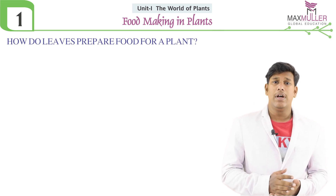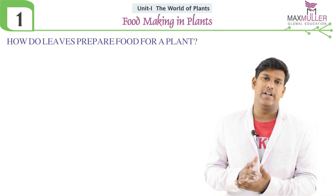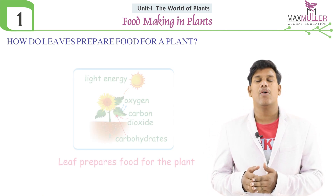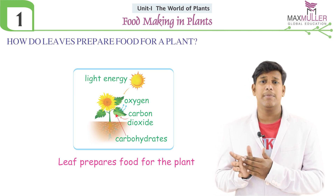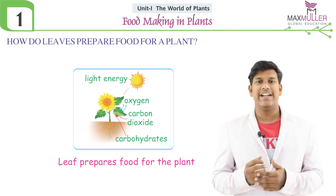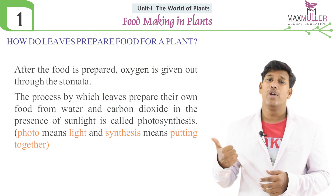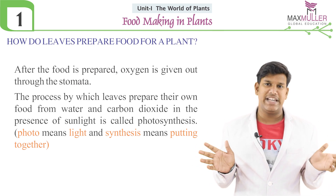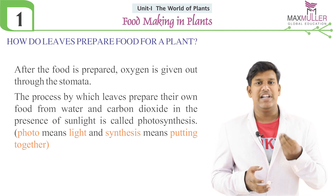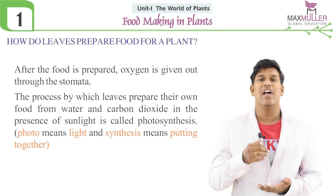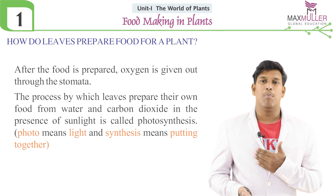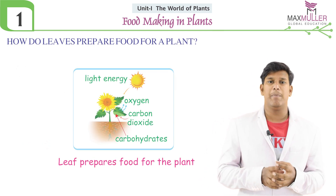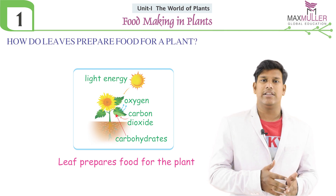As discussed earlier, plants prepare their food by the process known as photosynthesis. The word photosynthesis consists of two words: 'photo' meaning light, and 'synthesis' meaning putting together. The leaf prepares food with the help of light and other essential parts — both together known as photosynthesis, with sunlight playing the major role.